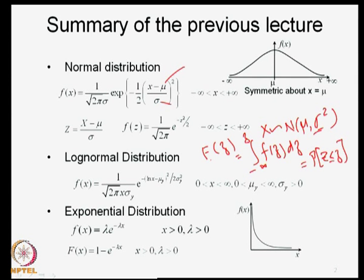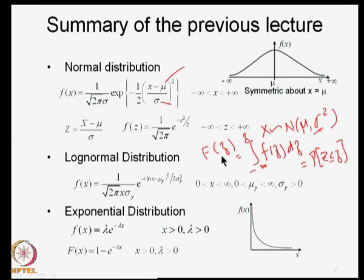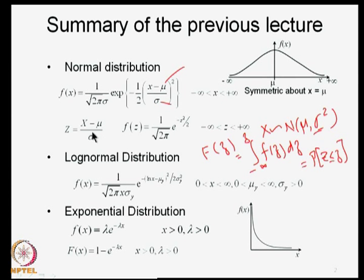Capital F(z) is tabulated. We use the tabulated values of F(z) to obtain different probabilities associated with the variable z and then transfer it to the variable x. We have seen a few examples of how to use the normal distribution tables for obtaining several probabilities associated with the random variable x.